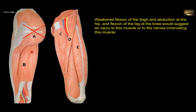B is a hamstring muscle on the lateral side and this is the biceps femoris muscle. The hamstrings are extensors of the hip, not flexors. This muscle does not do any abduction. It flexes the knee and also laterally rotates the flexed knee, but it doesn't flex the hip. So it's not B.